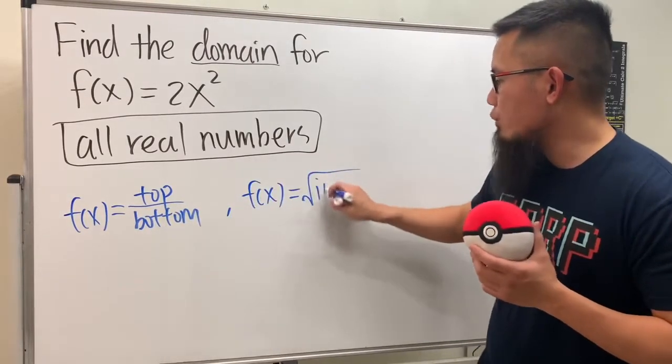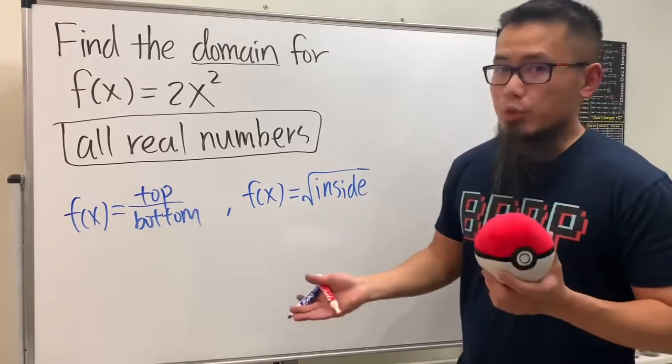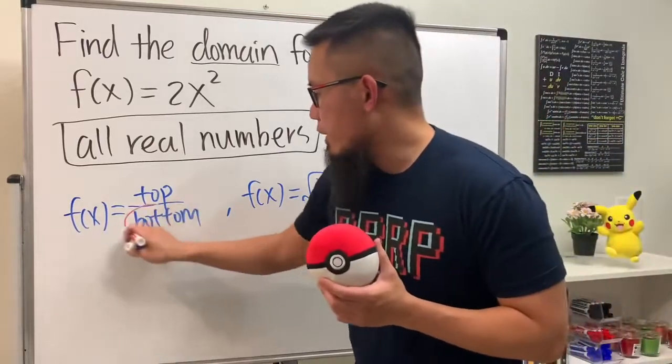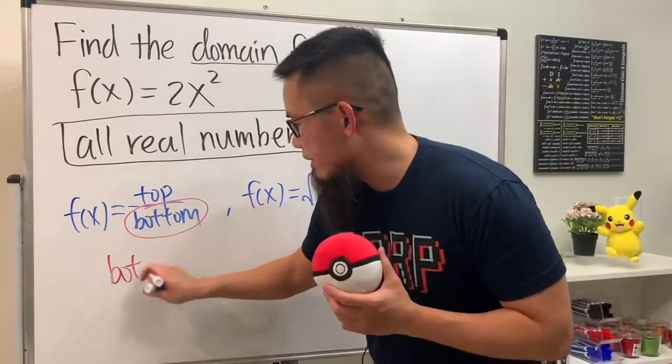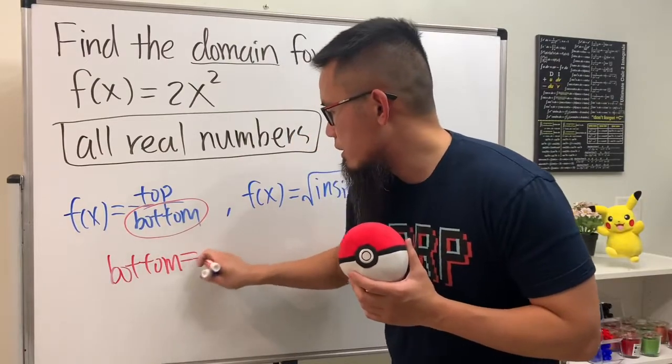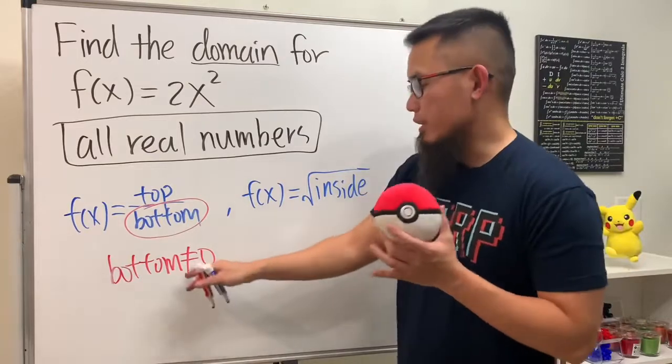So the restriction that you have to set is the following: this right here you will have to make sure that the bottom cannot be equal to zero, and then you will have to solve for this inequality.